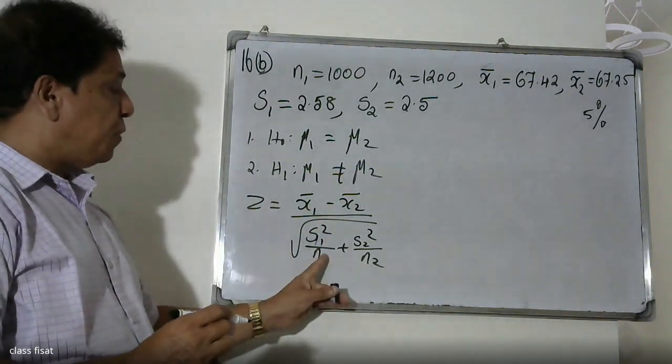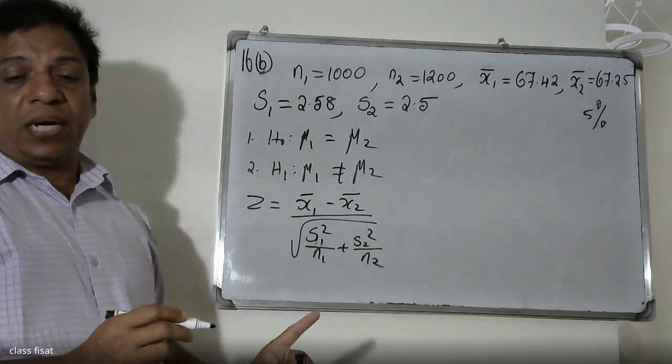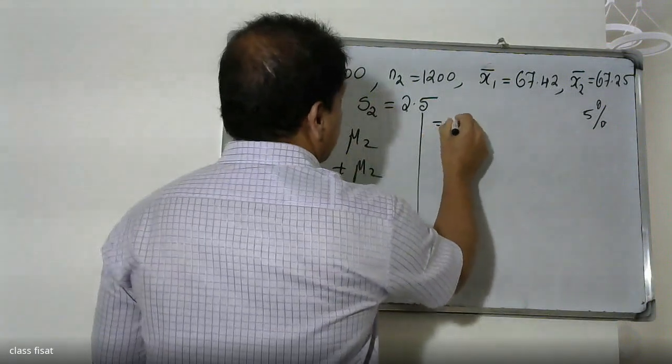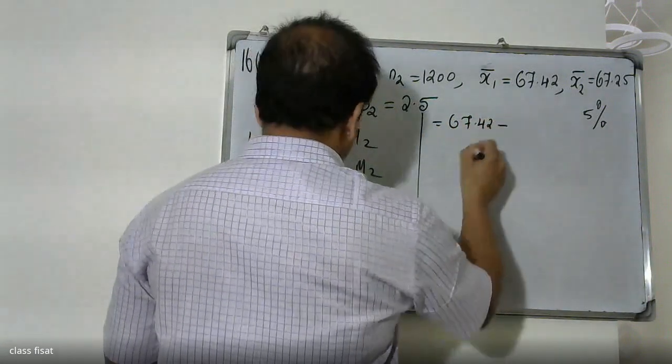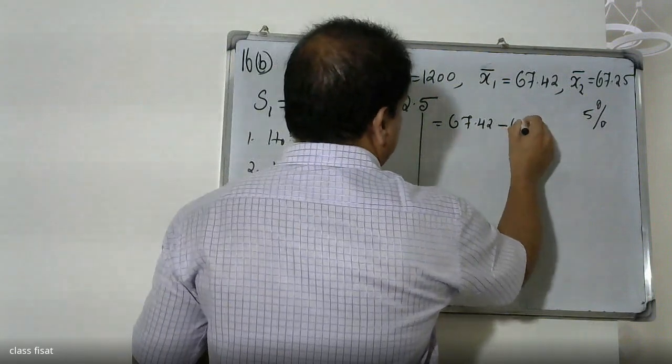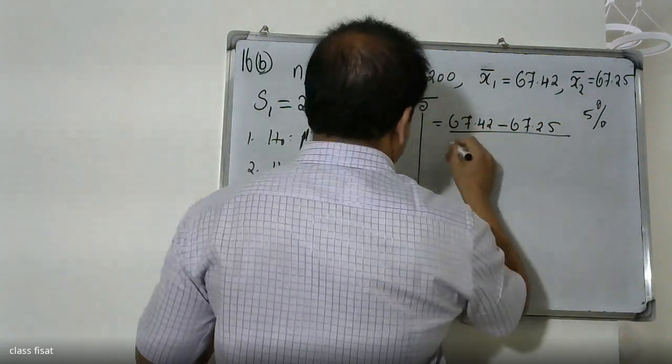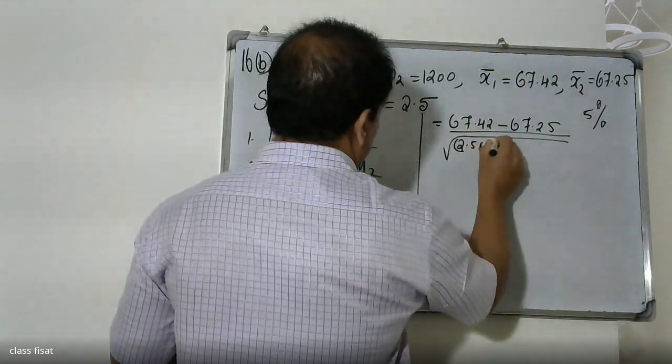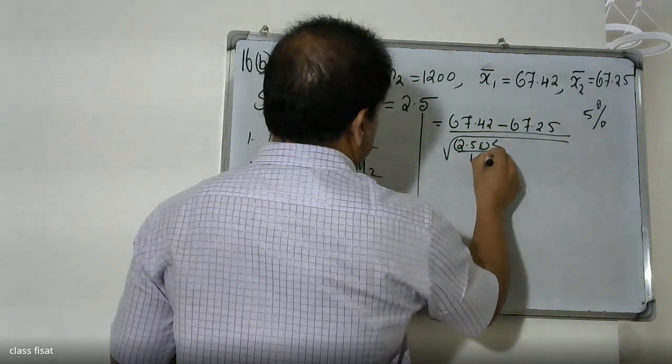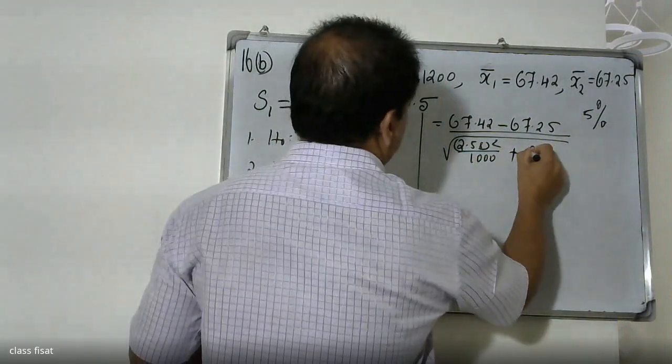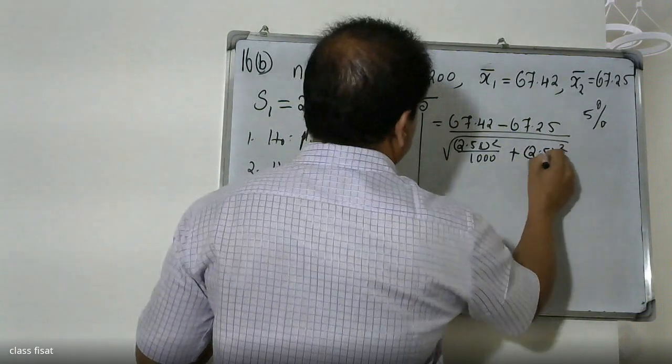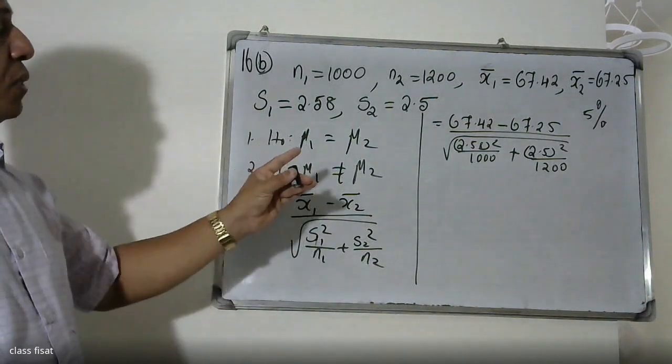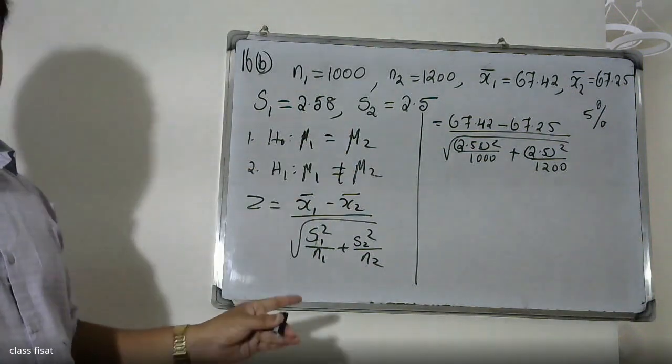Substitute the values. x̄1 is 67.42, x̄2 is 67.25, divided by root of (2.58² / 1000 + 2.5² / n2). Substituting the value.